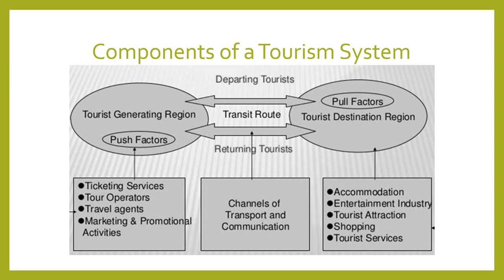Now let's move on to the components of a tourism system. Looking at this illustration, this is Leiper's tourism system model. The tourist generating region is the place where tourists come from. They travel to the tourist destination region and then return to their point of origin. The movement between these regions is considered the transit route, also known as tourist movement, and it involves both departing and returning tourists.